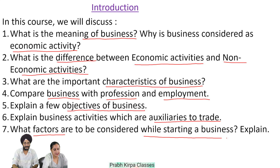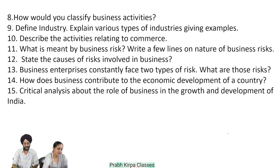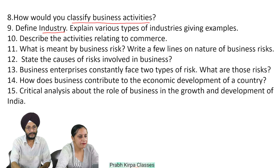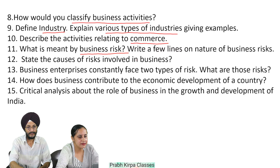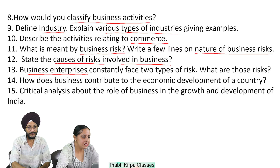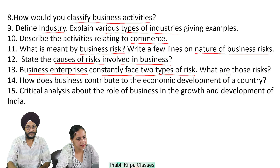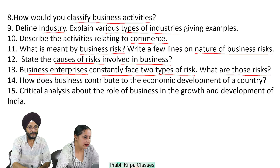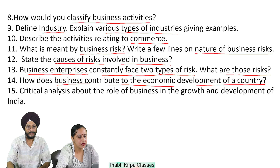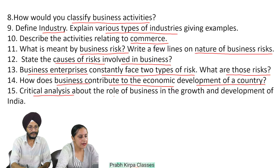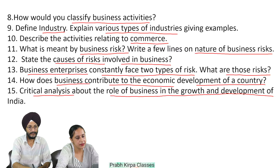Seventh, what factors are to be considered while starting a business? Eighth, how would you classify business activities? Ninth, define industry and explain various types of industries giving examples. Next, describe the activities relating to commerce. Eleventh, what is meant by business risk? Write a few lines on nature of business risk. Twelfth, state the causes of risk involved in business. Thirteenth, business enterprises constantly face two types of risks — what are those risks? Fourteenth, how does business contribute to the economic development of a country? Fifteenth, critical analysis about the role of business in the growth and development of India.